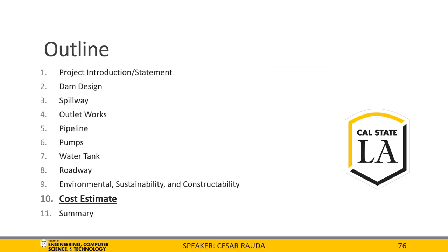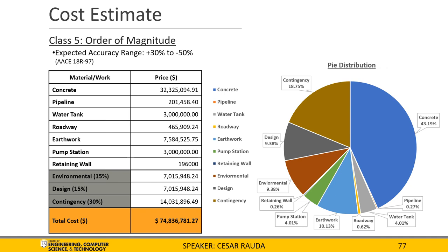Now onto the cost estimate portion of this presentation. For the total costs, we will be conducting a class 5 order of magnitude estimate. According to the AACE, this will list an expected accuracy range of plus 30% to minus 50% of the total value. On the table to the left, we can see a list of all the different aspects taken into consideration for the estimate, including the volume of concrete, the placement of roadway, earthwork for cut and fill, and retaining wall. Along with these, we calculated an additional 50% for environmental and design permits each, and a 30% contingency. After calculating all these different parts, the total estimated cost is approximately $74.8 million. The volume of concrete required for the project takes up a majority of the total estimated cost, with the contingency and earthwork taking up the next most substantial portions.